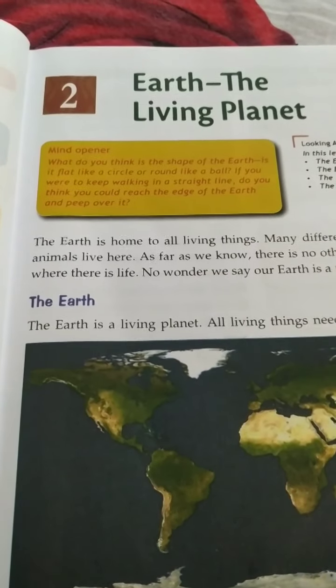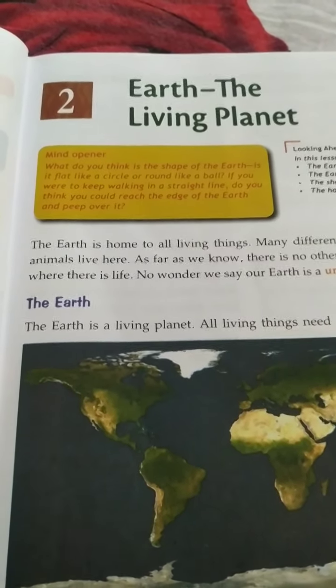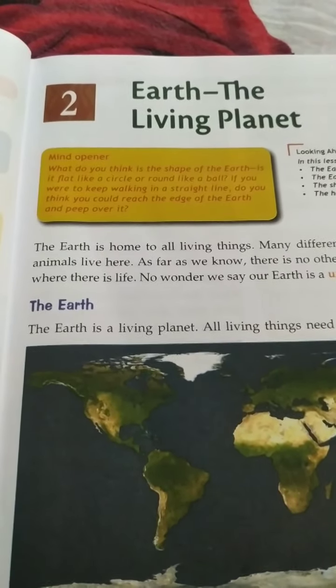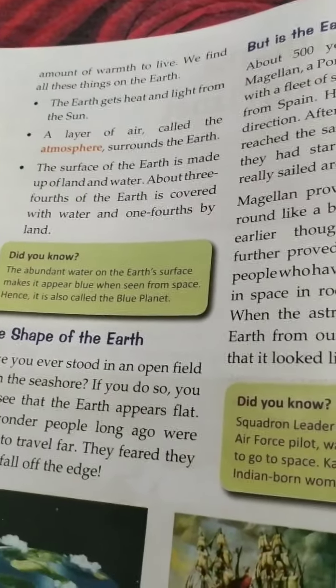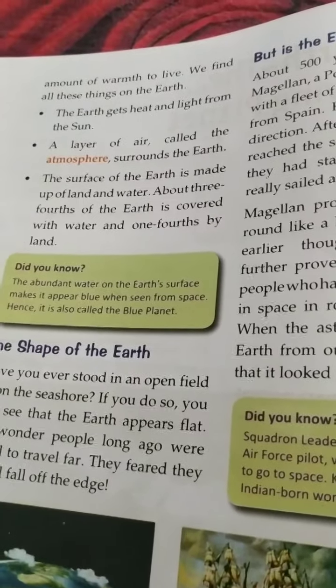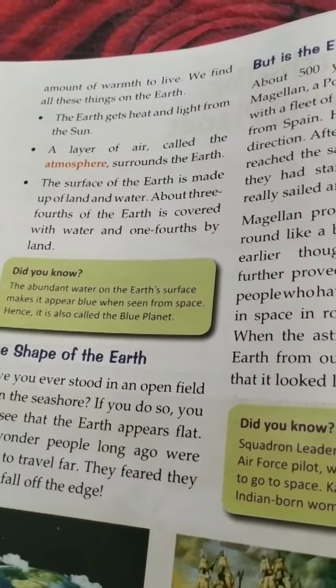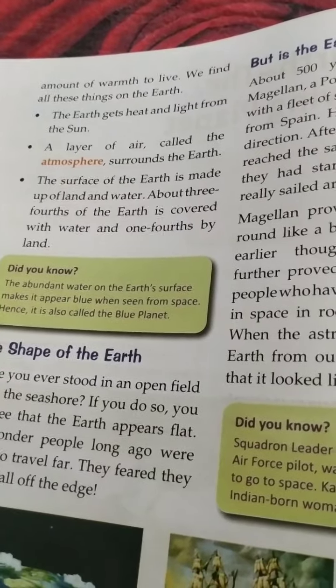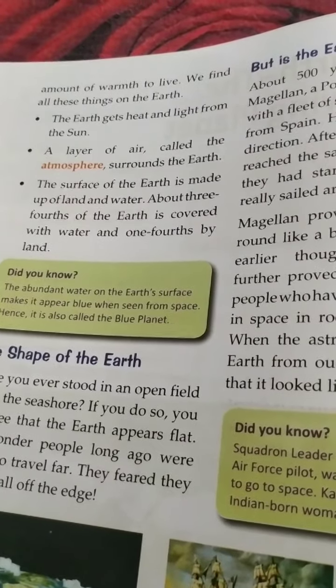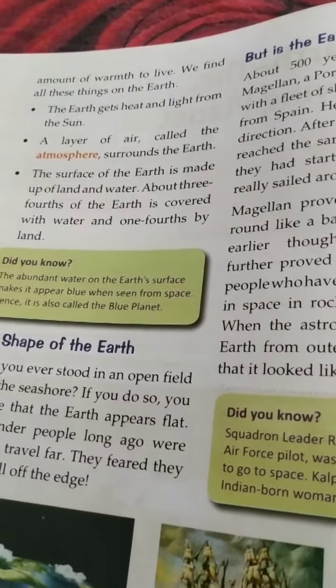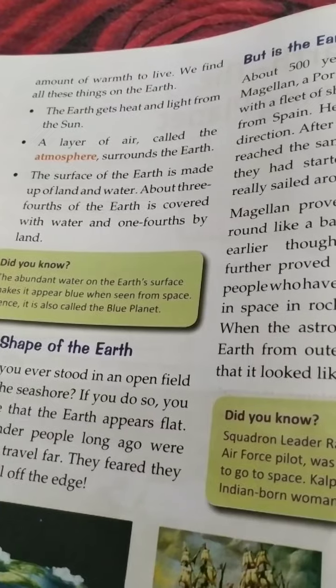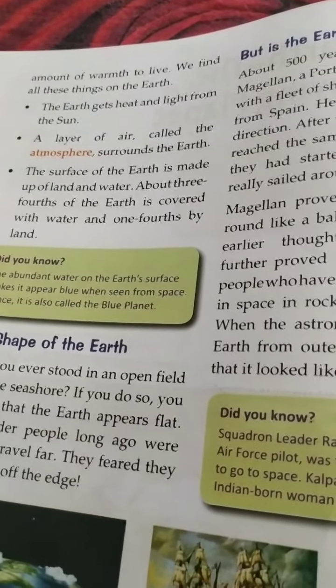Earth is a living planet. All living things need air, water, and the right amount of warmth to live. Without these, living things cannot survive. So all these we find on the earth only.